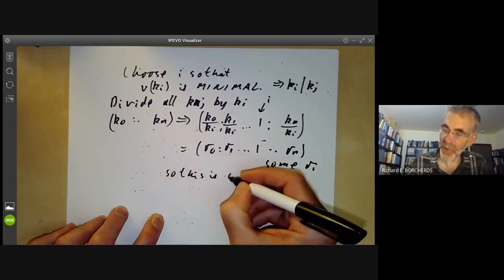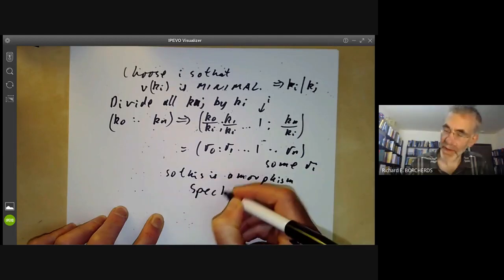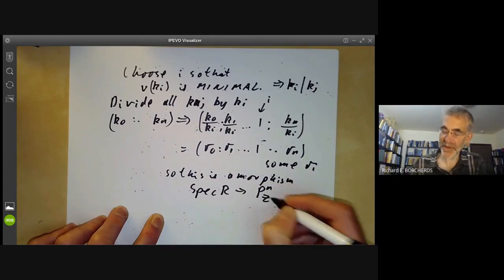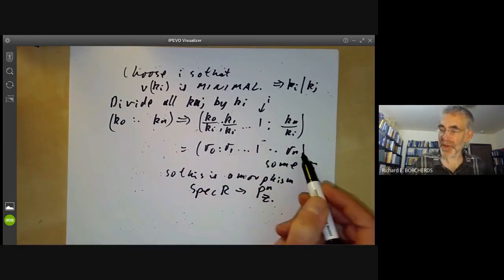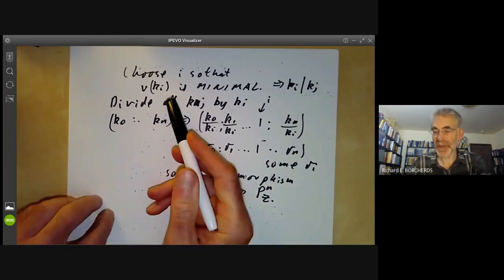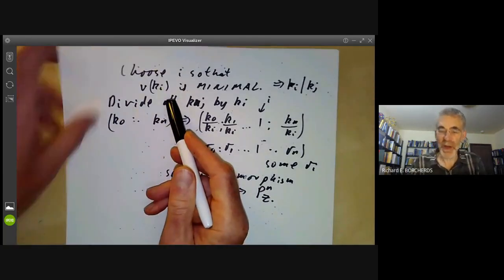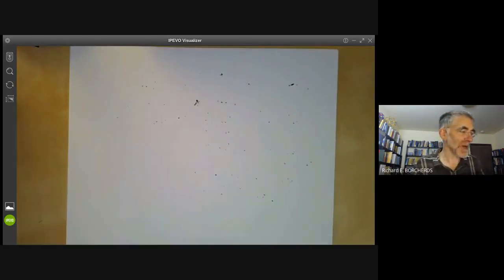So this is a morphism from the spectrum of R to n-dimensional projective space over the integers. And it's also easy to show such a point is unique up to multiplication by units of the ring R. So we have shown that projective space over the integers is proper over spec of Z. And this can be extended to show that all projective morphisms are proper.